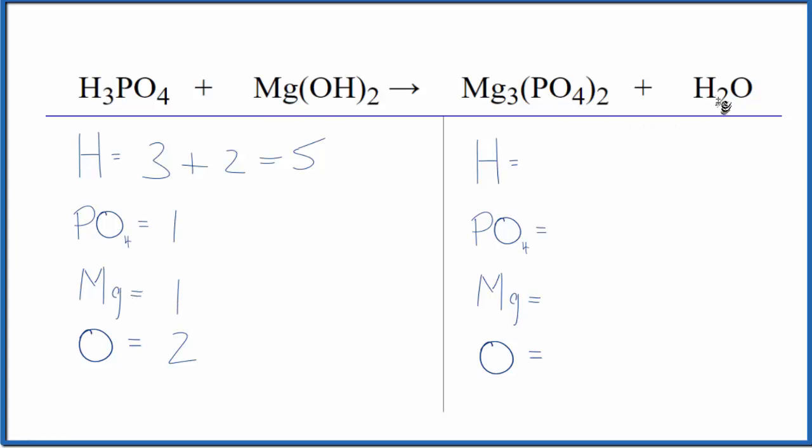On the product side, we have two hydrogens, one phosphate times two, we've got three magnesiums, and then we have just one oxygen. So we don't count these oxygens because they're part of the phosphate, so they're already counted. Let's see what we can do here.